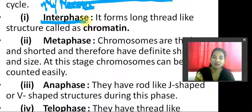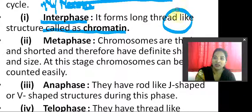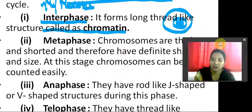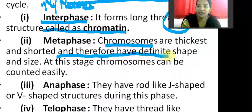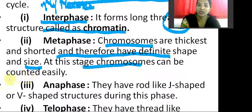First we will learn about interphase. At interphase, the chromosome forms a long thread-like structure called chromatin inside the nucleus. After interphase, the cell undergoes metaphase, anaphase, and telophase. Chromosomes are thickest and shortest — having a definite shape and size — at the metaphase stage. At this stage, chromosomes can be counted easily.